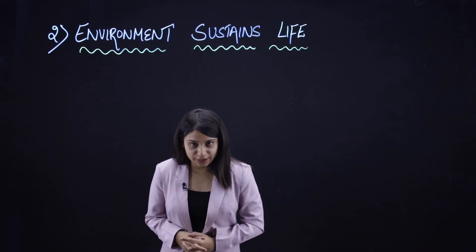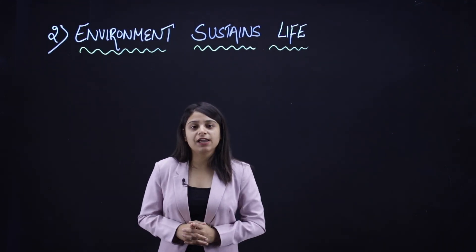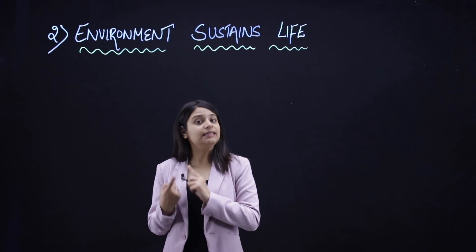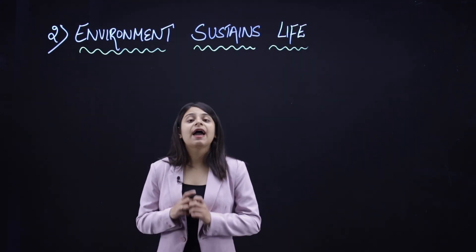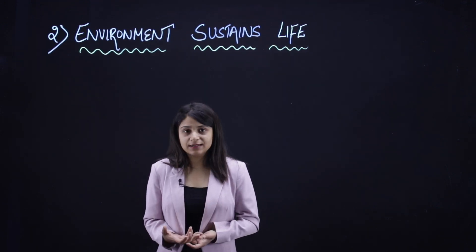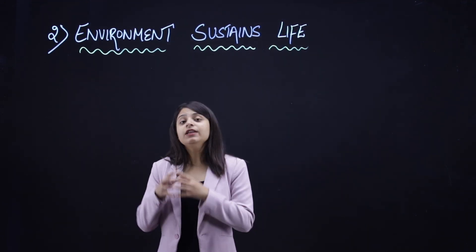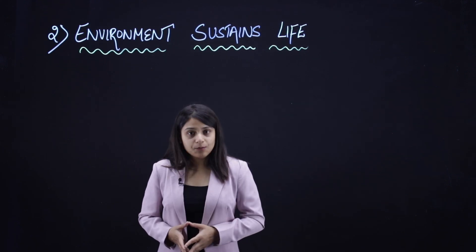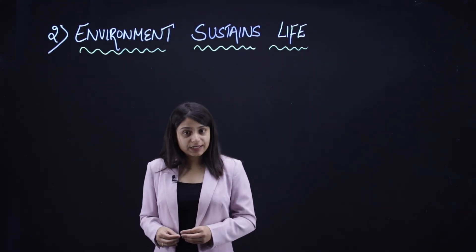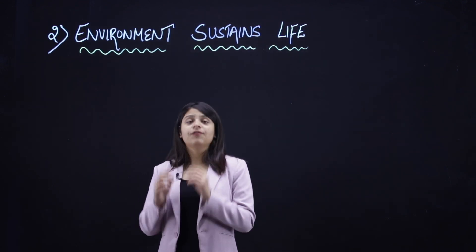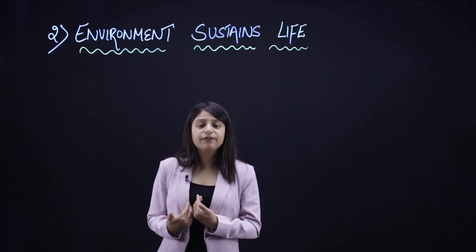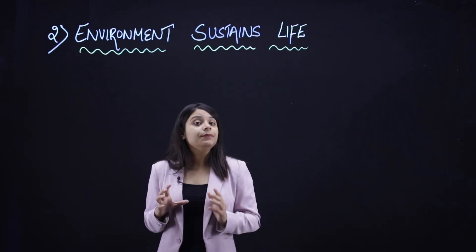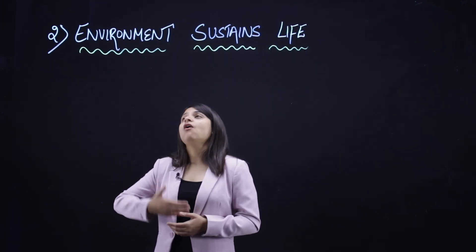The next point is: environment sustains life. To survive, human beings need air, water, sunlight, and soil. All these essential things are present in our environment. If these things are not present, we cannot survive. It is important that we have all these things. Environment sustains not just human life, but also other animals, creatures, and microorganisms — all life depends on environment.